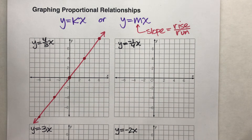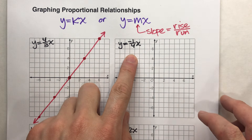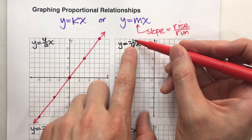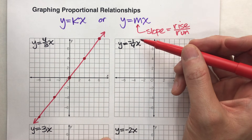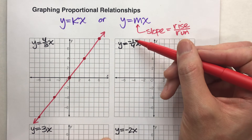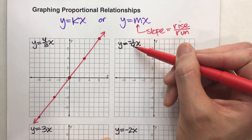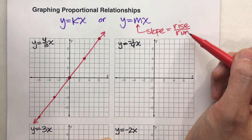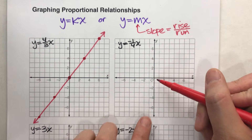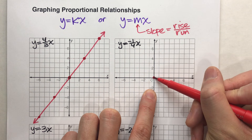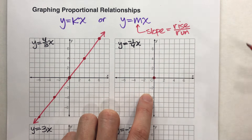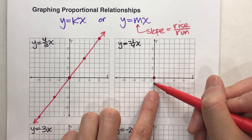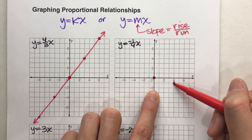Let's do another one. y equals negative one-fourth x. This time, my rise is negative 1, so it's going to go down 1. But the bottom number, the 4, is still my run — it's going to go to the right 4. Starting at (0, 0), because every proportional relationship starts at (0, 0), I'm going to go down 1 and then right 4.